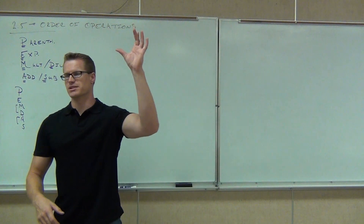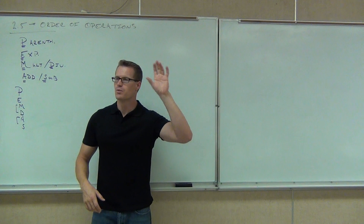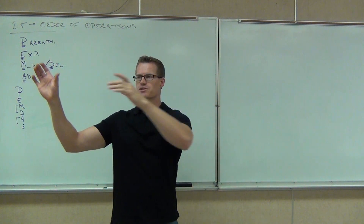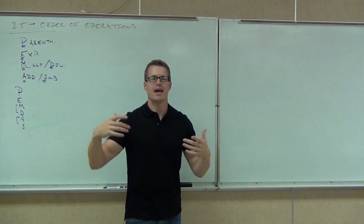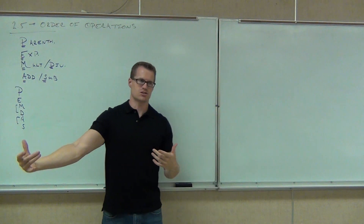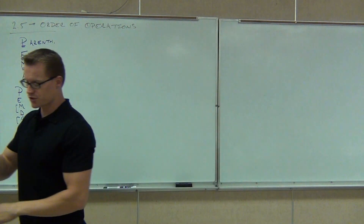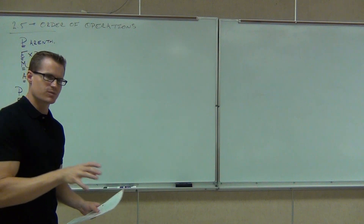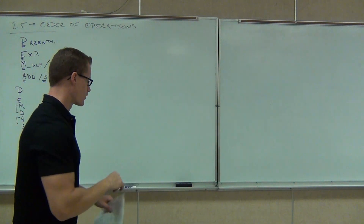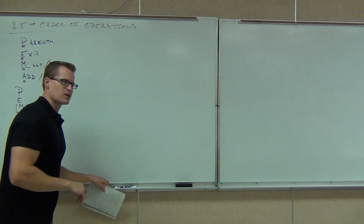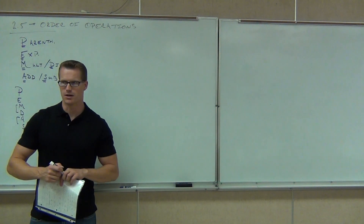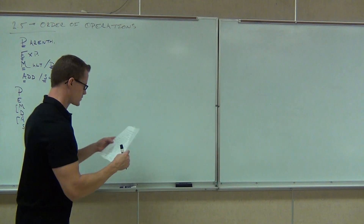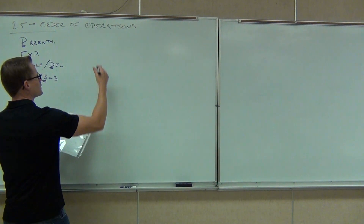We're still looking for parentheses first, then exponents, then multiplication and division from left to right — whichever one occurs first — and finally addition and subtraction from left to right, whichever one occurs first. With that in mind, let's go ahead and review a couple of things. Some people struggled on this last time, so I need to make sure you've conquered this problem first.